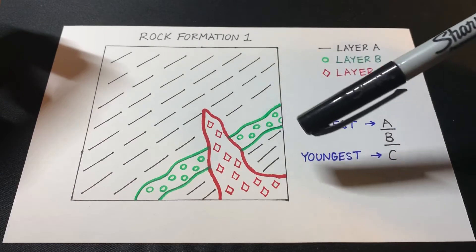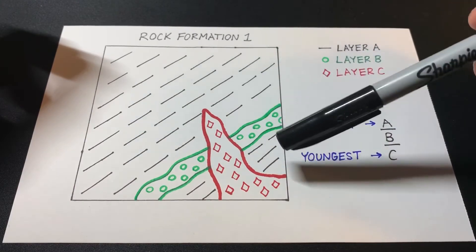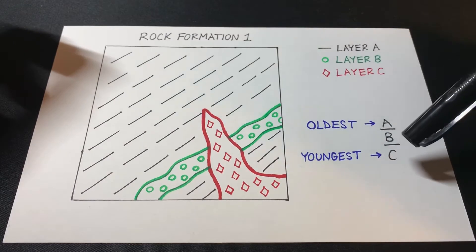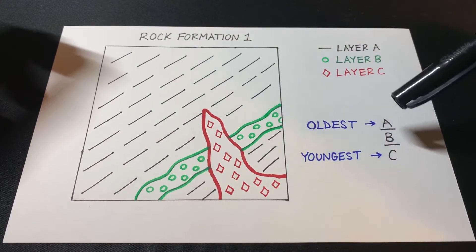And because C is overlapping layer B and A, that would make layer C the youngest layer. And layer B would be in the middle of the two.